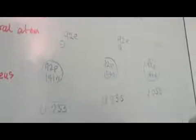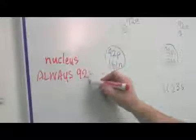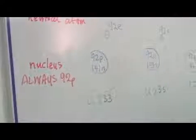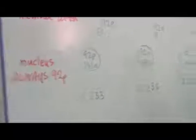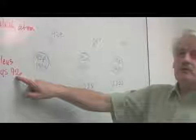Within the nucleus there is always ninety-two protons. Here, ninety-two protons in each case. So the atom of uranium is described by saying there are ninety-two protons in the nucleus.